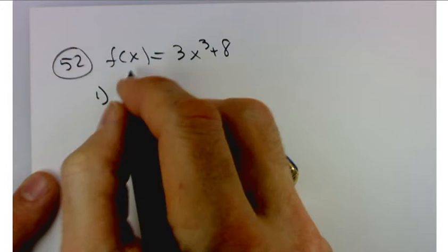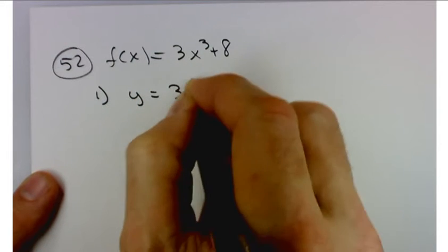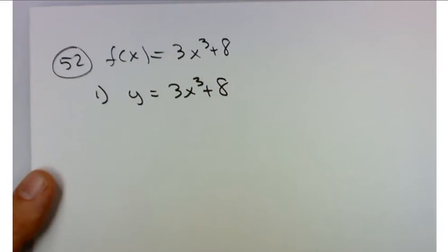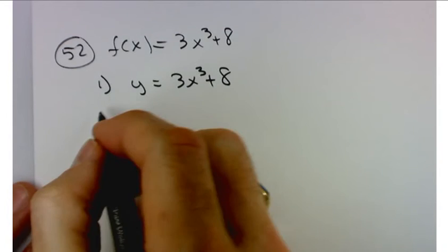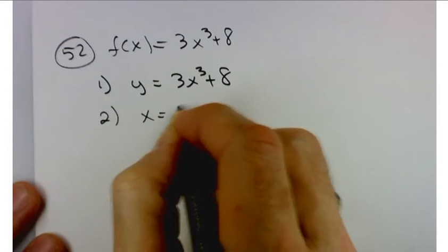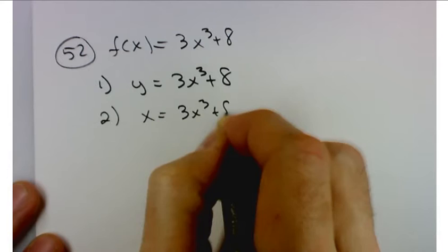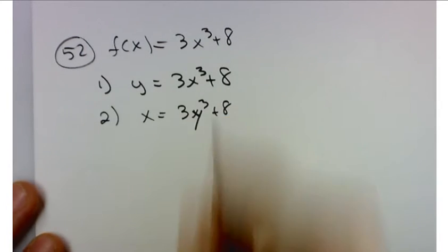Then what? Switch x and y. x equals 3x cubed plus 8, or 3y cubed plus 8.